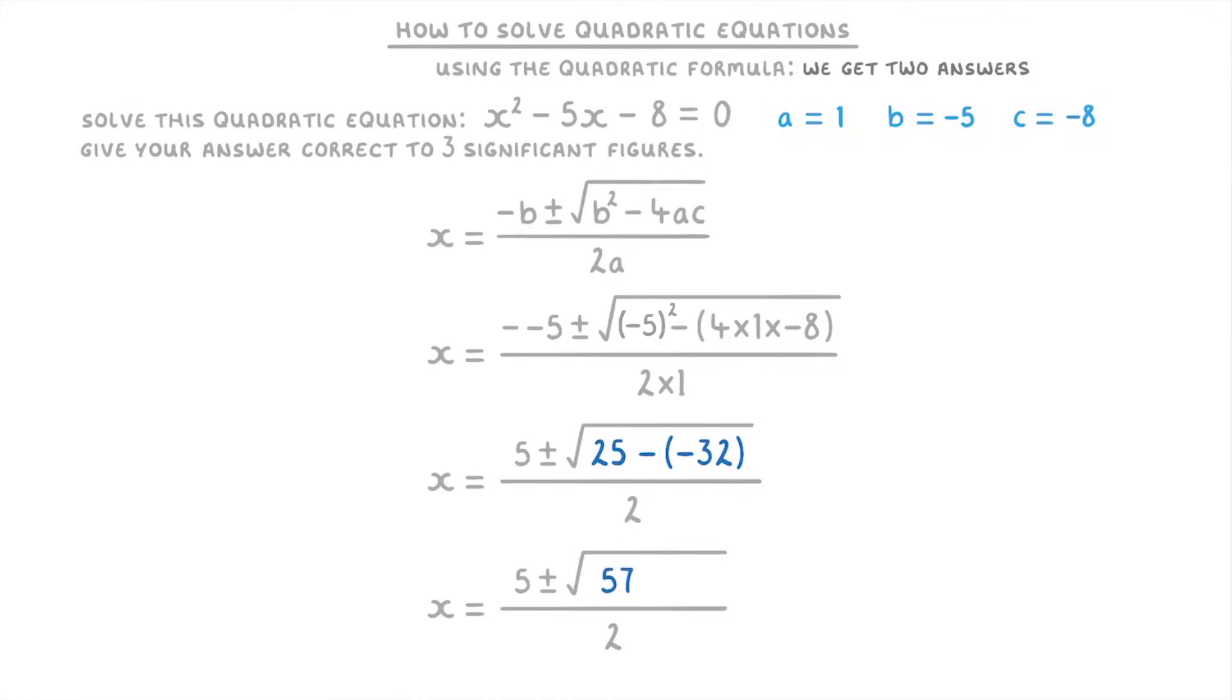So now that we've simplified it as much as we can, we know that our two solutions for this question will be (5 + √57)/2, which given to three significant figures is 6.27, and also (5 - √57)/2, which is -1.27.